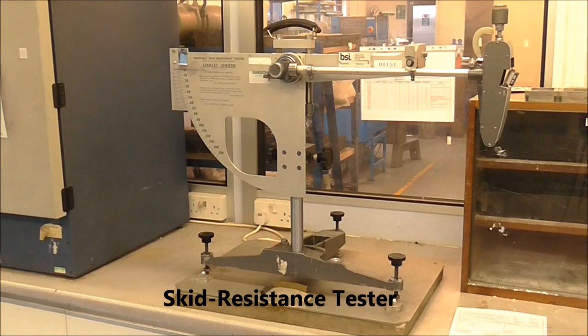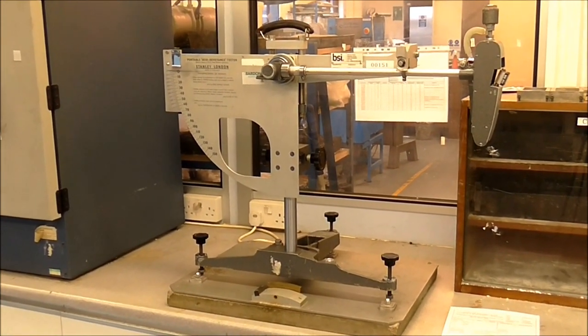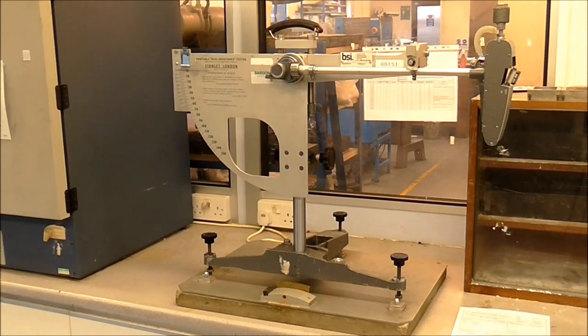The final stage of the PSV is to test the specimens using a skid resistance tester. The tester contains a pendulum arm with a small rubber slider attached to its base.